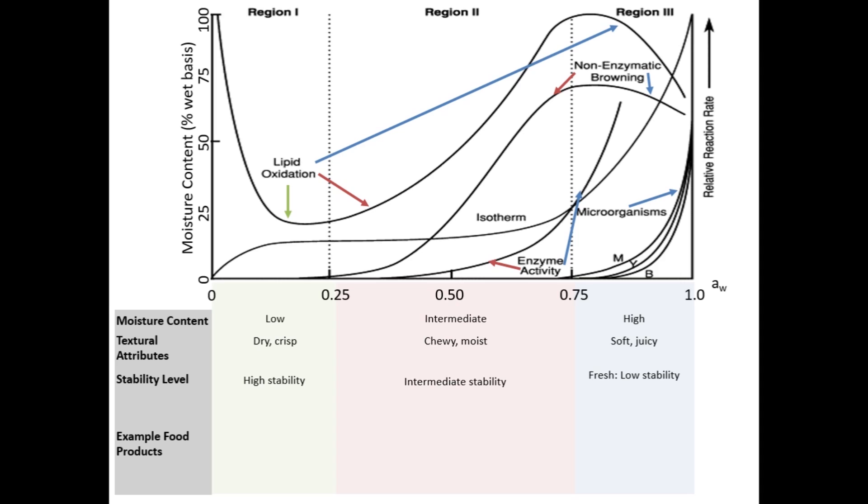However, foods in region 3 can undergo processes like canning and pasteurization that improve their stability and thus give them longer shelf lives.